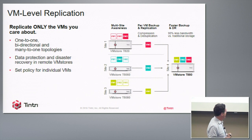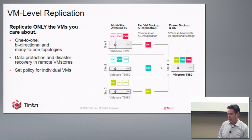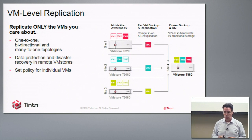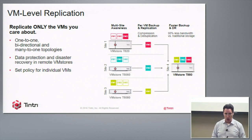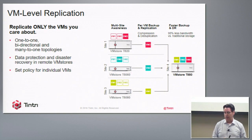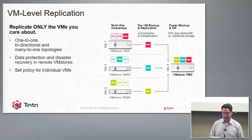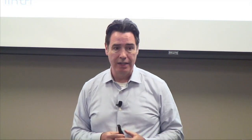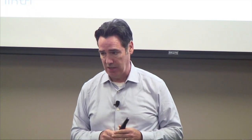We support VM-level replication — rather than replicating at a LUN or volume level, you replicate at the individual virtual machine level. The benefits are that you can have different policies associated with different VMs and change them independently without basing replication on whichever LUN you're sharing. It's more flexible, easier to use, and more efficient. What we see with customers is that in many cases they're replicating only 5 to 15 percent of their VMs, sending far less data over the network.